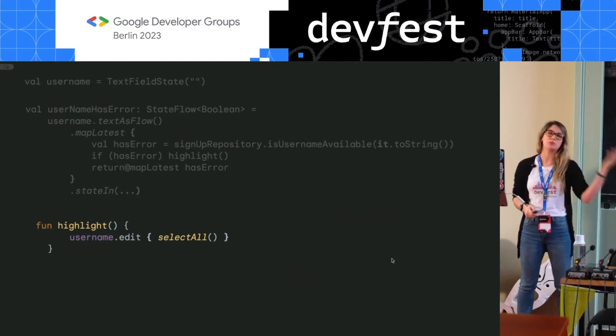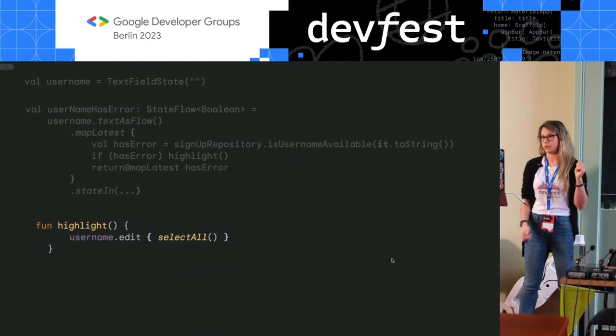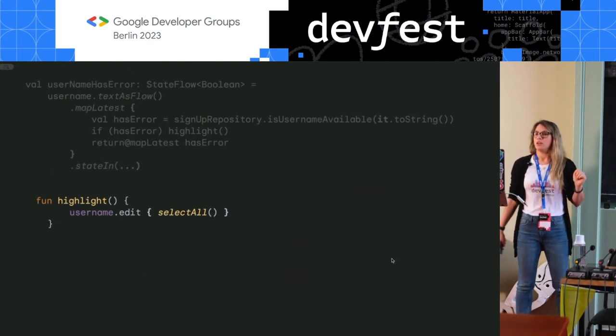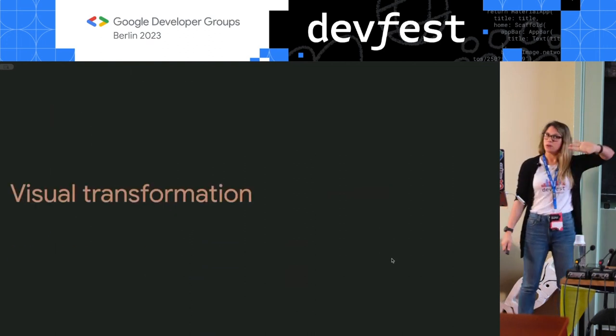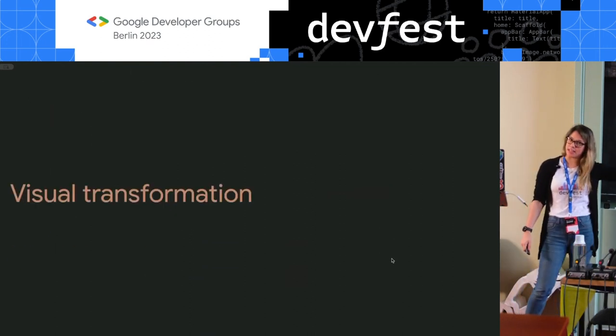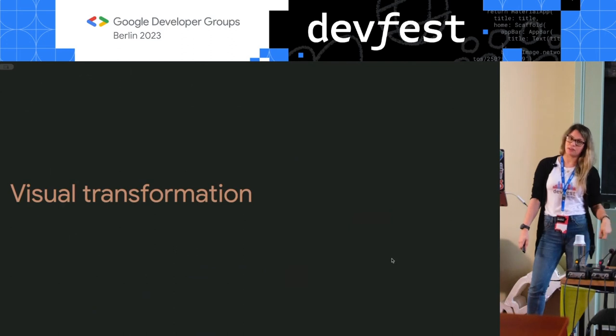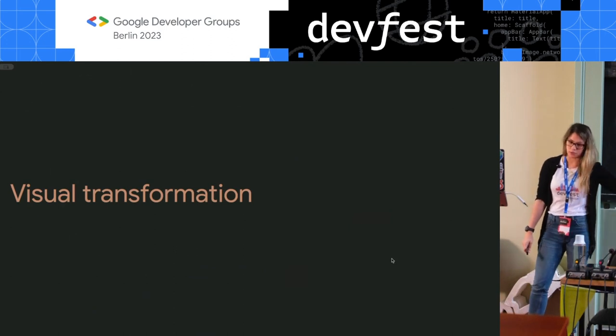You can also do programmatic edits in composition. For example, if validation failed and you want to select all the text so the user can quickly retype, you check if there's an error and call a highlight method that does text field dot edit and select all — it's that simple.